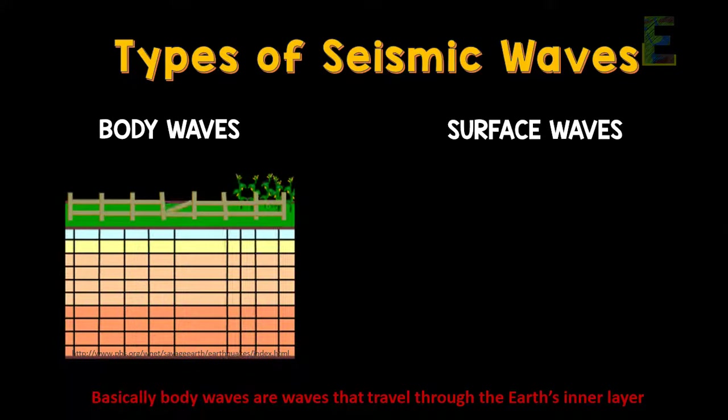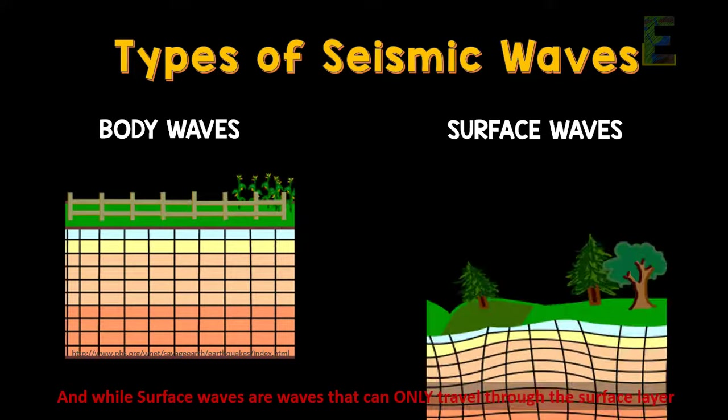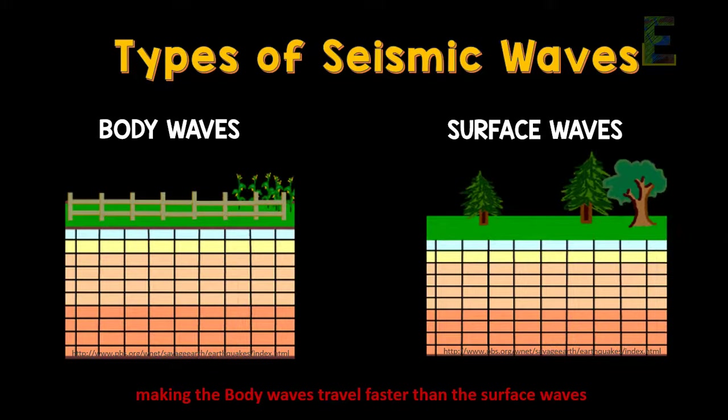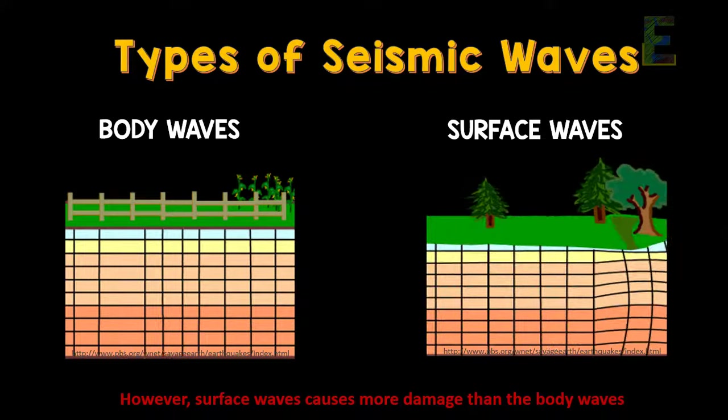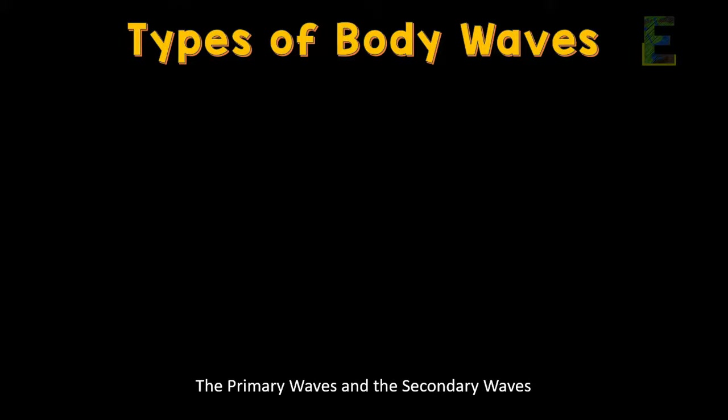There are two types of seismic waves: body waves and surface waves. Body waves are waves that travel through the Earth's inner layer, while surface waves are waves that can only travel through the surface layer, making body waves travel faster than surface waves. However, surface waves cause more damage than body waves.